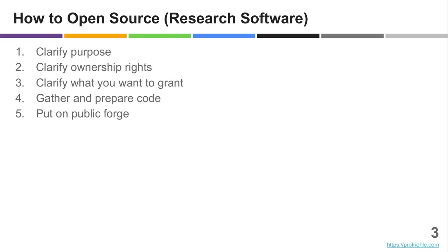What you should be doing instead is to ask yourself: why am I open sourcing? What is the purpose of why I am going to make my research software source code available for free? Here are my five steps of going through the process of open sourcing your research software, and you have to start with clarifying why you do it — then everything else, including the license, will follow from that.